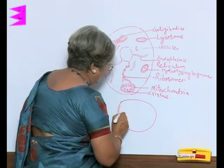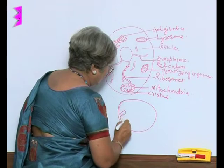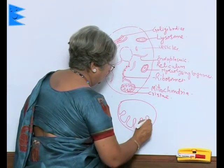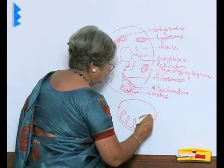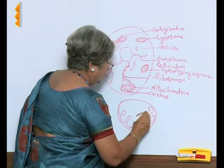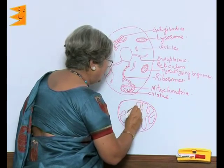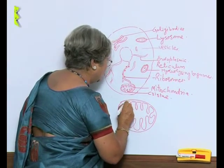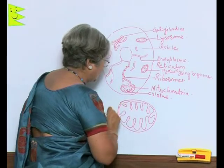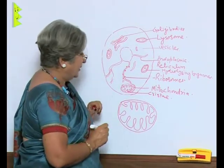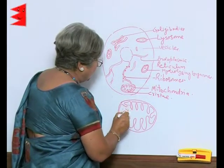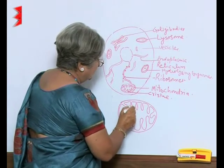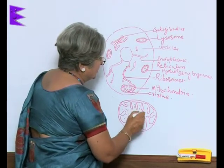Just to get a better view — where is the need of making these cristae? Because we want more surface area. This surface area is filled with respiratory enzymes.